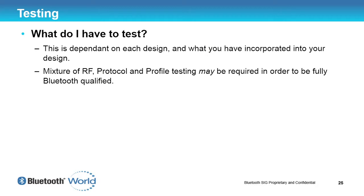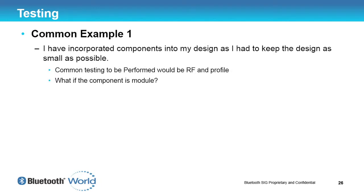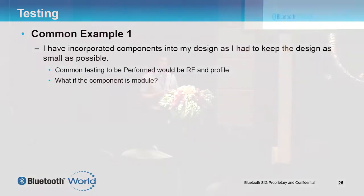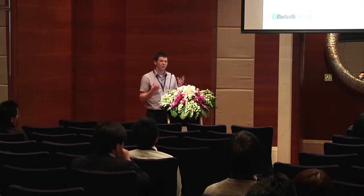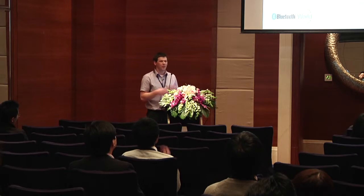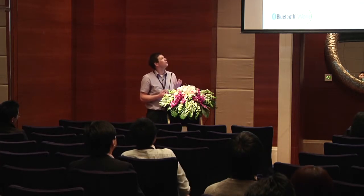The key question we're working towards from the Test Plan Generator is: what do I have to test? Each implementation is different depending on what you've incorporated into your product. You can't just say you need to do RF and profile or protocol and RF — each project is individual. As a common example, take a Bluetooth headset you've designed using a chip manufacturer's chip and stack.